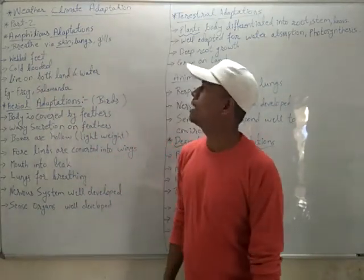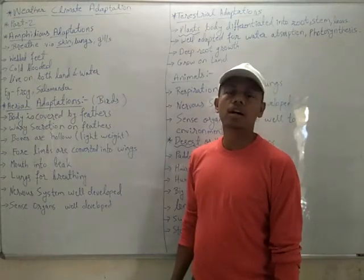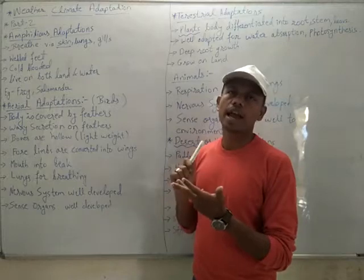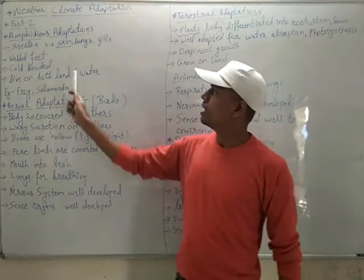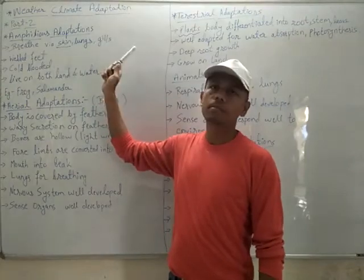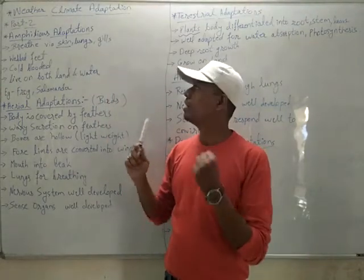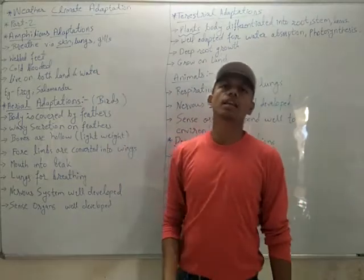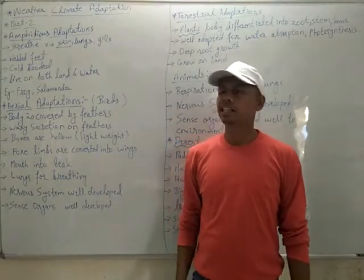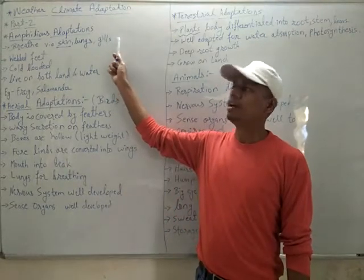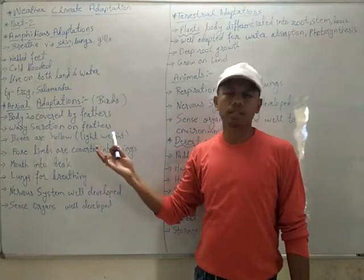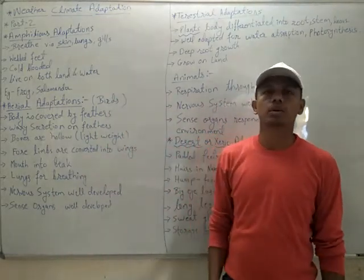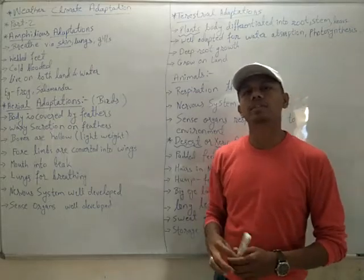The very first character seen in amphibious organisms is they can breathe via skin, lungs, and gills. Amphibious organisms can breathe in three ways: gill, lung, and skin. Regarding gills — when frogs are in the developing tadpole stage, they breathe through gills because they continuously live in water at that stage.